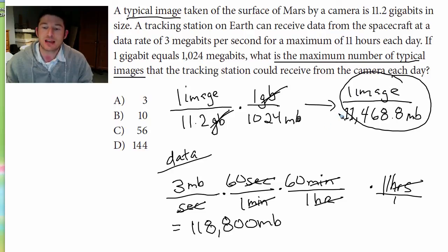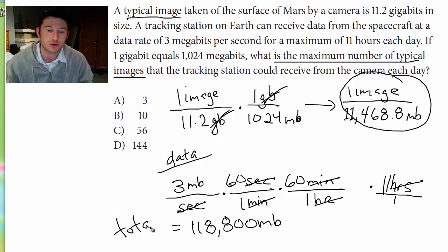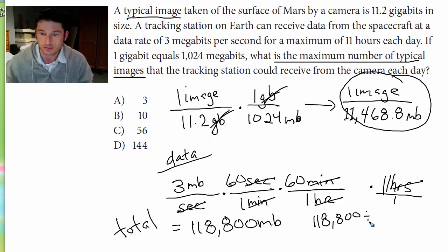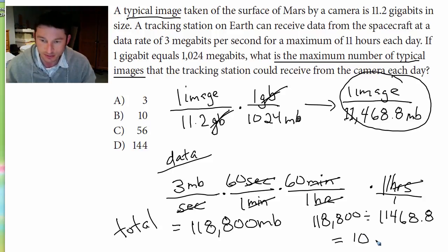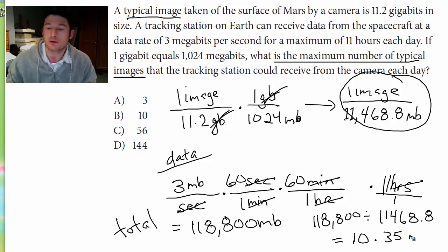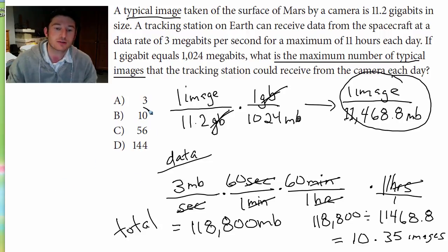So they want to know how many images you can get. If one image is 11,468.8 megabits, and you can receive a total of 118,800 megabits, all we're going to do is divide one into the other: 118,800 divided by 11,468.8. You should get 10.35. That means you can get a maximum of 10 and 0.35 images — but really, you're just getting 10 images.